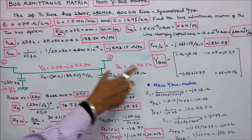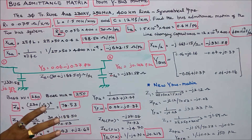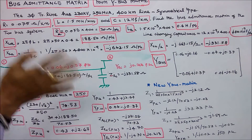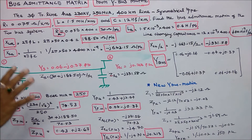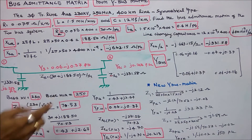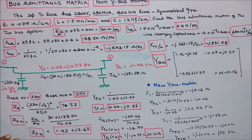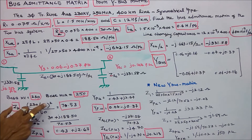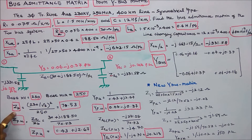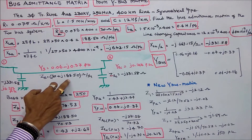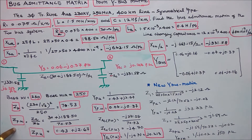All values are in ohms per phase, so I need to convert them into per unit. I choose base kV = 230 kV (line-to-line), so phase voltage is 230/√3. Base MVA = 250. Base impedance = (230/√3)² / 250 = 70.53 ohms. Actual series impedance is 30 + j188.50, so per unit impedance Z_pu = actual / base = 0.43 + j2.67 per unit.